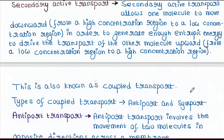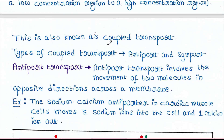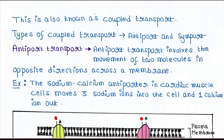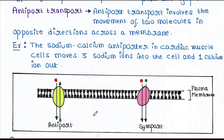Secondary active transport is also known as coupled transport. There are two types of coupled transport. Antiport transport involves the movement of two molecules in opposite directions across a membrane. For example, the sodium-calcium antiport transport in cardiac muscle cells moves three sodium ions into the cell and one calcium ion out.